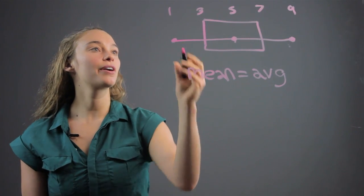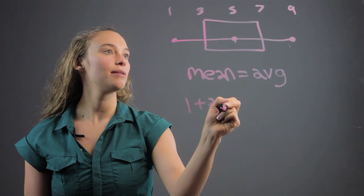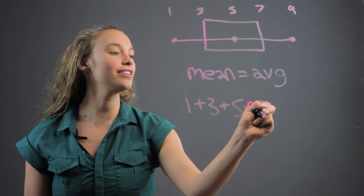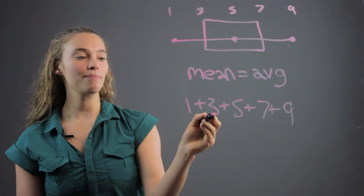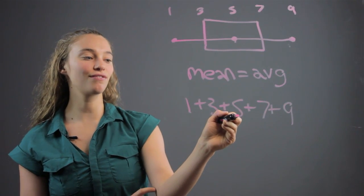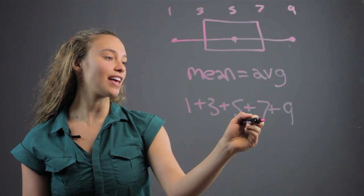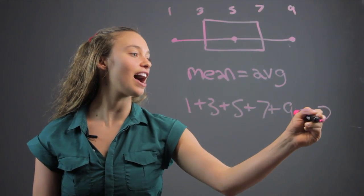So, in this case, we're going to add one plus three plus five plus seven plus nine. One plus three is four, plus five is nine, plus seven is sixteen, plus nine is twenty-five.